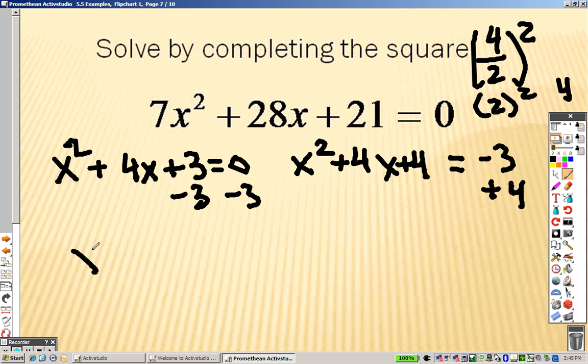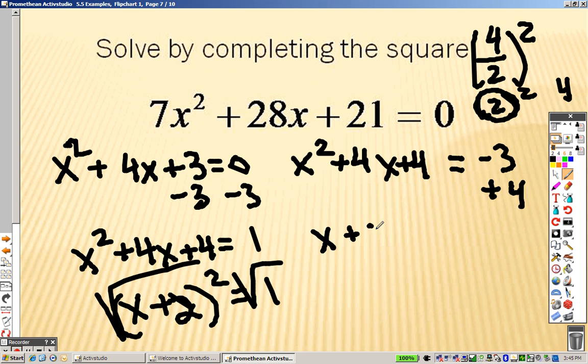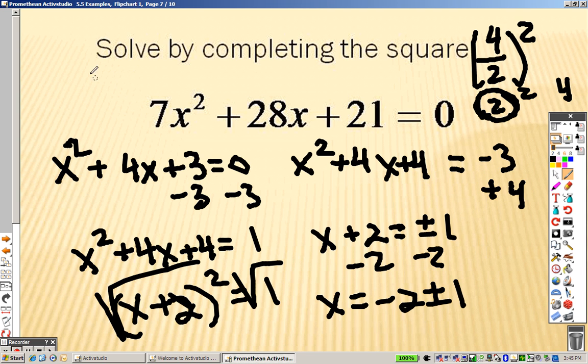So I end up getting x squared plus 4x plus 4 equals 1. And whatever is inside the parentheses, which is a 2, that is my factor. So this is x plus 2 squared equals 1. I square root both sides. So I get x plus 2 equals plus or minus 1. I would minus 2 on both sides. So I get x equals negative 2 plus or minus 1. So negative 2 plus 1 is negative 1. And negative 2 minus 1 is negative 3. And there are your two answers.